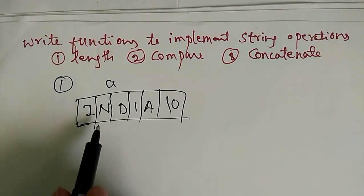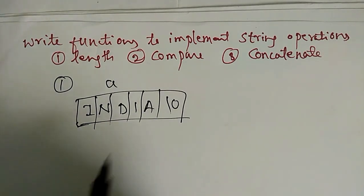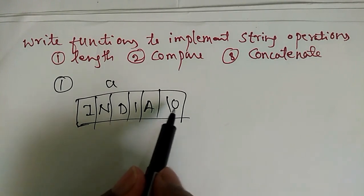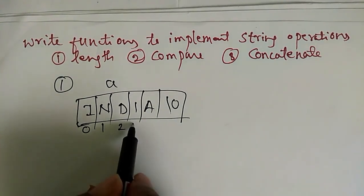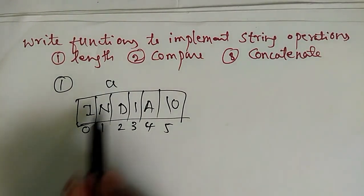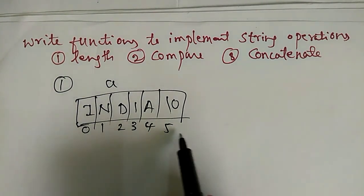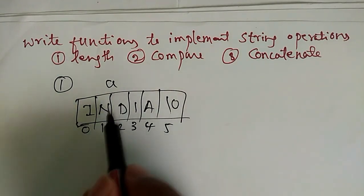In C language, whenever we read a string, the compiler automatically assigns the backslash 0 at the end, with index values 0, 1, 2, 3, 4, 5. A string is nothing but an array of characters, starting at index 0 and ending at one more than the length of the string.